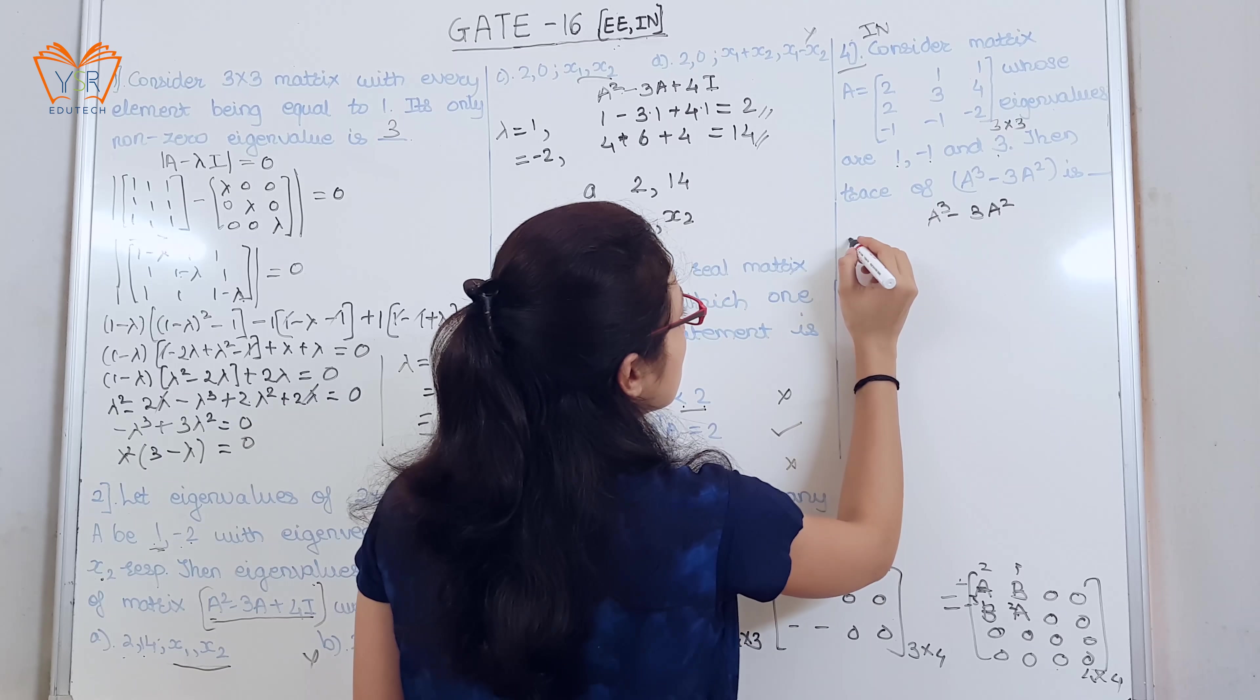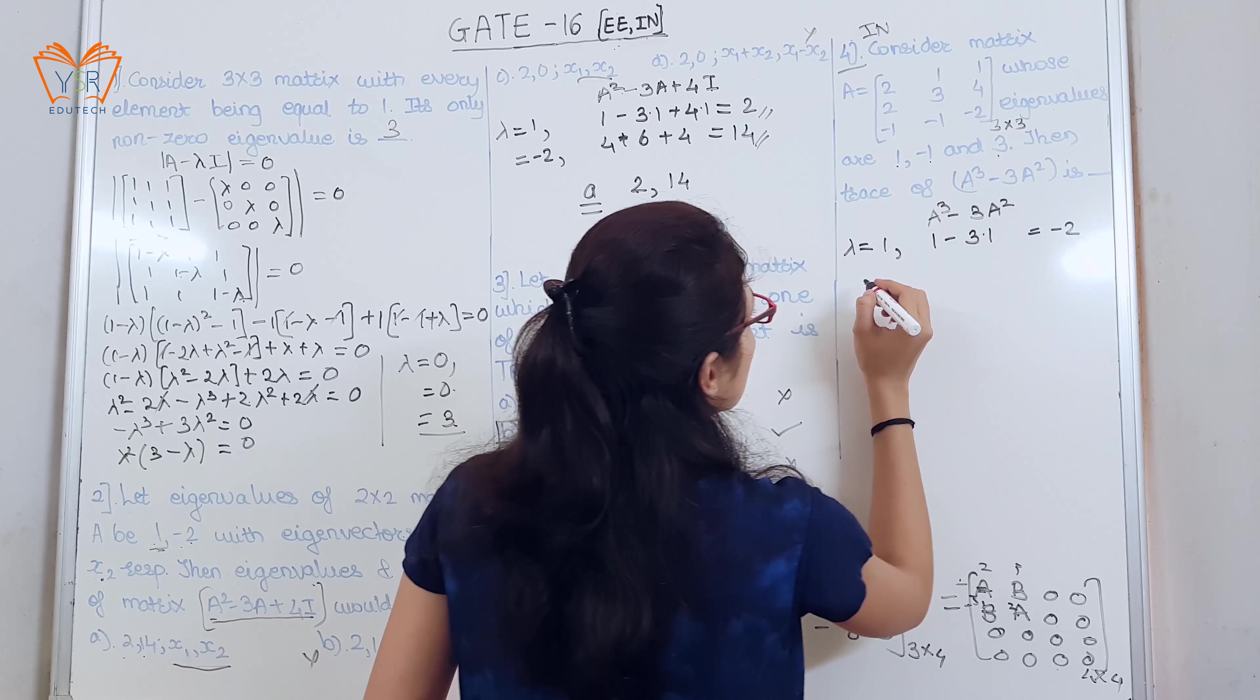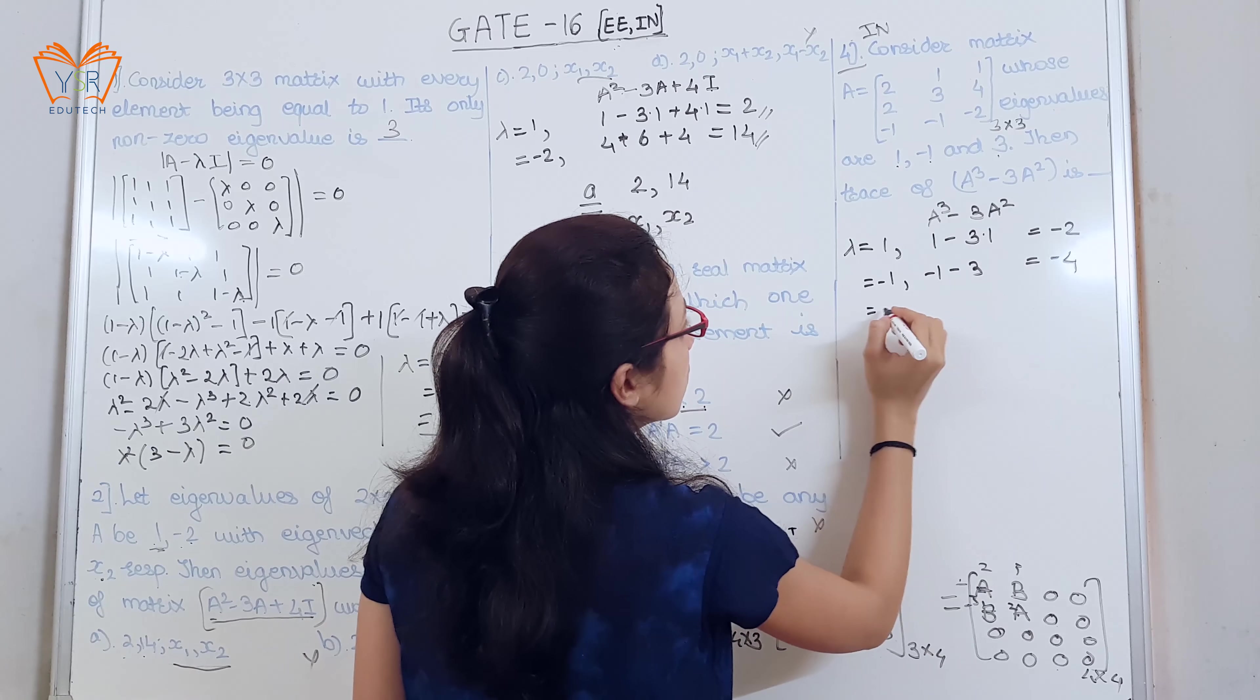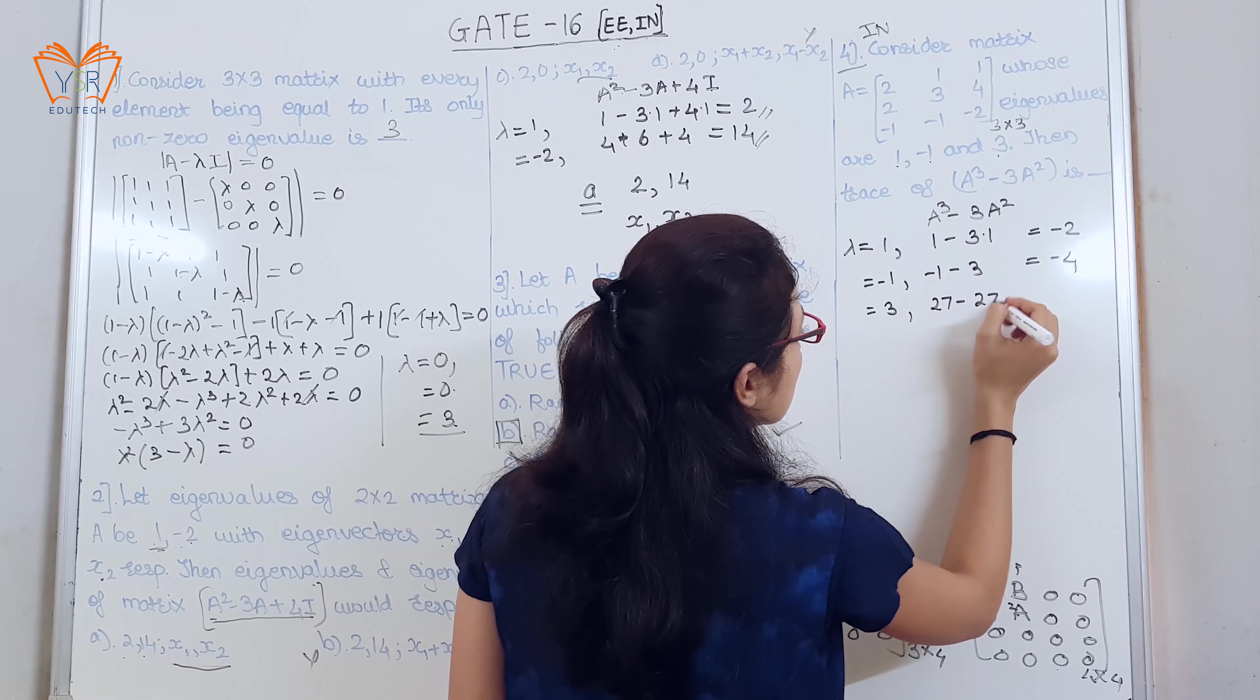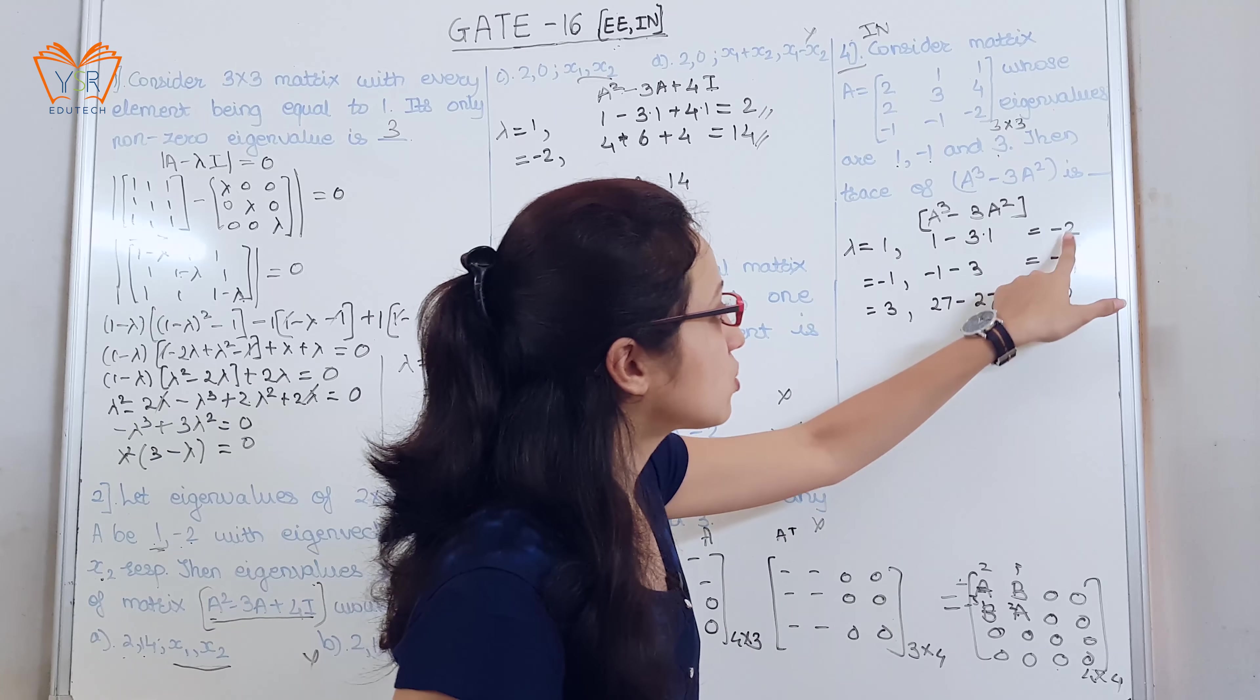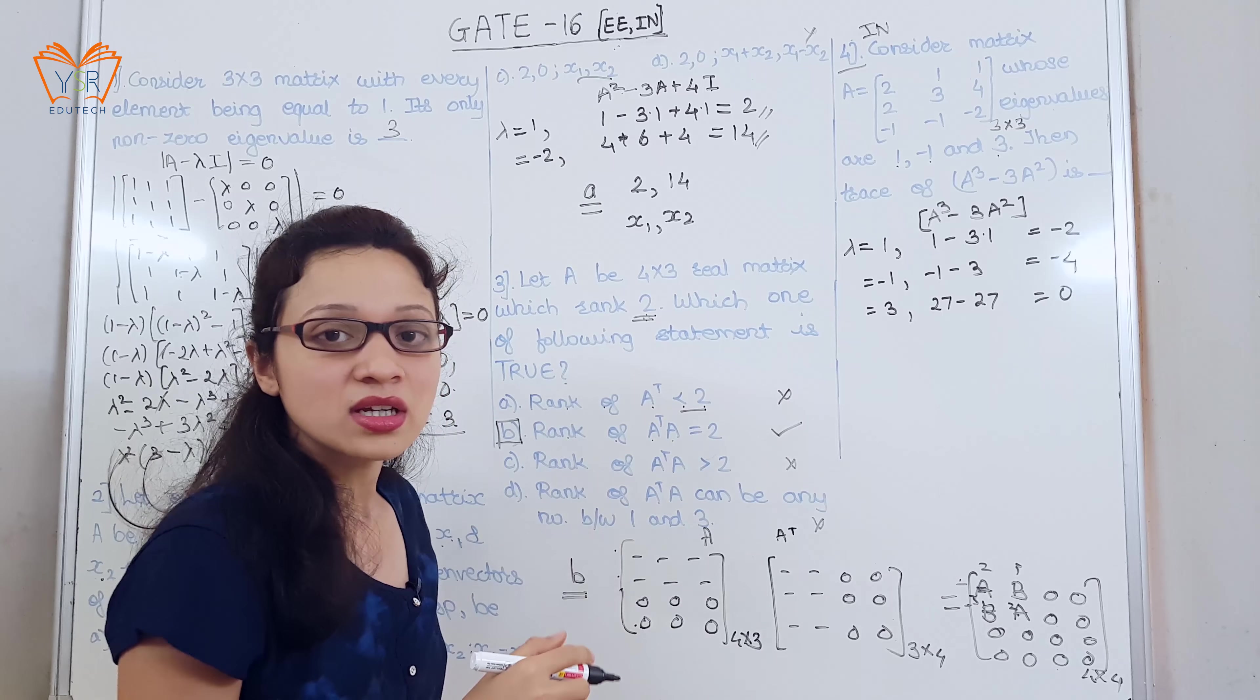For eigenvalue equal to 1, 1 minus 3 into 1 is equal to minus 2. For minus 1, minus 1 minus 1 minus 3, that is minus 4, and for 3, cube is 27 minus 3 into 27. So, eigenvalue for this matrix is minus 2, minus 4 and 0. We have asked the trace of this matrix. Trace is nothing but sum of the eigenvalues.